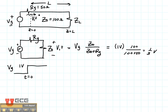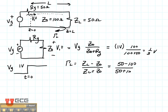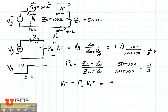What happens then is that V1 plus propagates down the transmission line and gets to the end, where it's going to reflect with a reflection coefficient gamma L. Gamma L equals ZL minus Z naught over ZL plus Z naught. With ZL equal to 50 ohms, gamma L is 50 minus 100 divided by 50 plus 100, giving us minus one third. So the wave propagating back, V1 minus, equals gamma L times V1 plus, which is minus one third times one third, or minus one ninth.